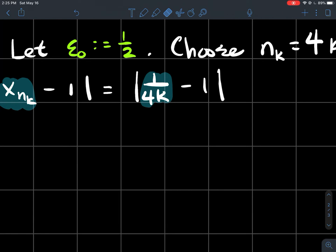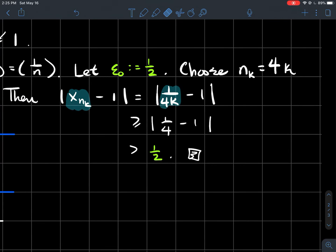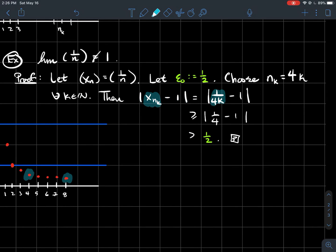So this difference is always at least what happens when you take 1 fourth away from 1, which is bigger than a half. So my point, what did you just show? You just showed that the terms in your sequence never get within one half of 1 is what these inequalities say together right there in a picture.